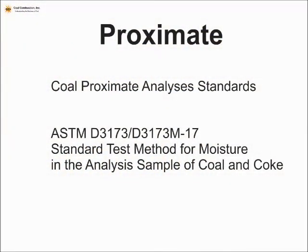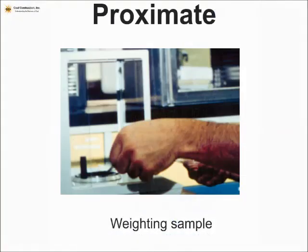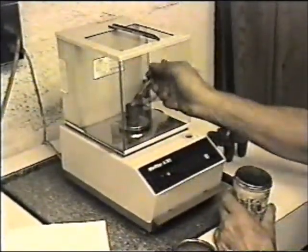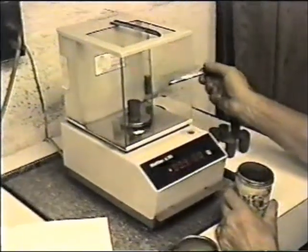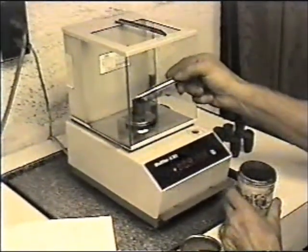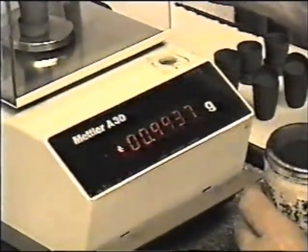ASTM D3173 is how we measure moisture. We'd perhaps use a more modern technique today, but essentially you're going to weigh out about one gram of sample. The residual or inside moisture is measured with about one gram, or a higher weight if a TGA device is used.